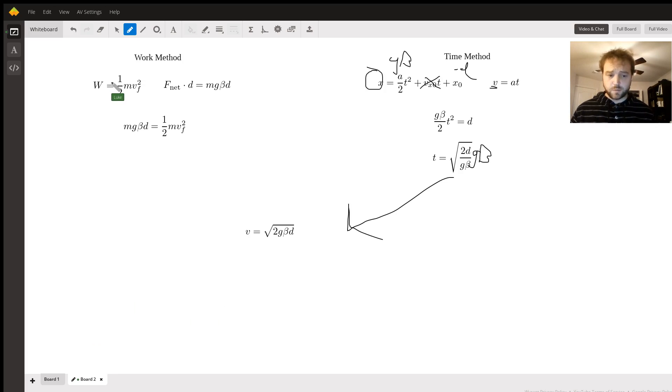The work method is a little bit more elegant. We set the work equal to ½mv² where v is the final velocity. The work is going to be the net force times the distance - in this case fairly simple. We know that's mg*beta*d. We set those two equal: mg*beta*d = ½mv². We cancel the m's and then we simplify to get the same expression: v is going to be the square root of 2g*beta*d.